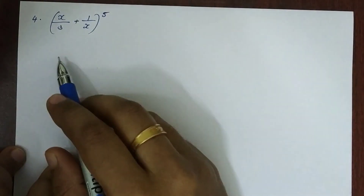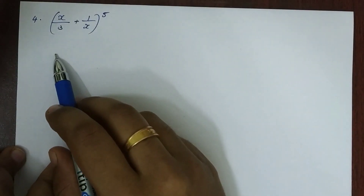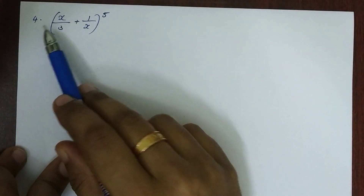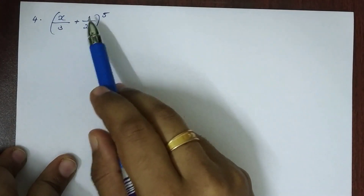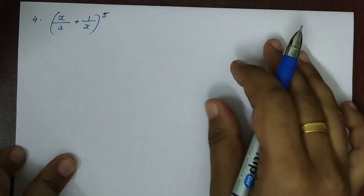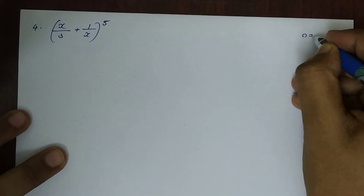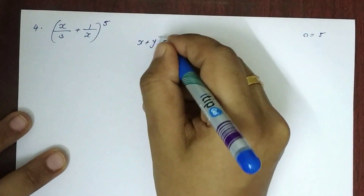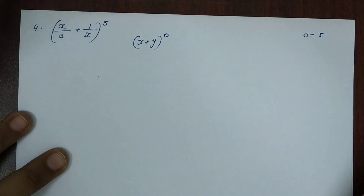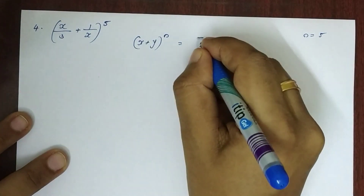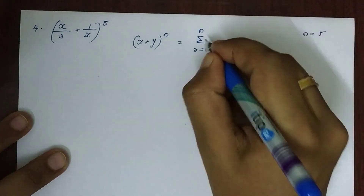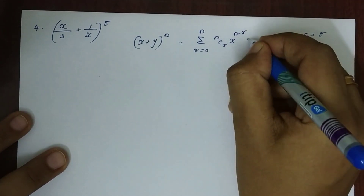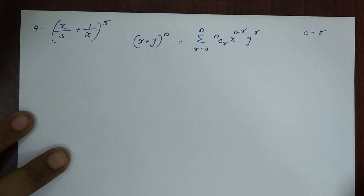Hi students. We are going to apply the binomial theorem to the third and fourth questions. We will state the binomial theorem: (x + y) raised to n equals summation from r = 0 to n of nCr times x raised to (n minus r) times y raised to r. This is the binomial theorem.